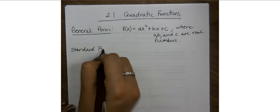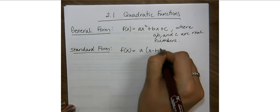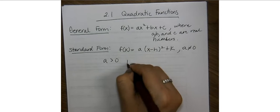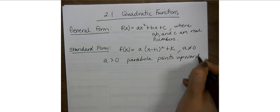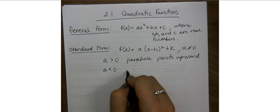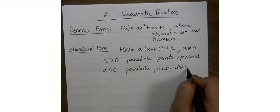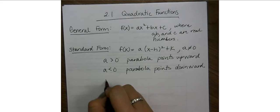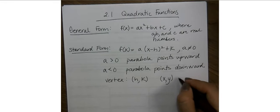The one we're going to really focus on is standard form, and that's where you can get a lot of your information from. So it's f of x equals a times x minus h squared plus k. A cannot equal 0. If a is greater than 0, the parabola points upward. If a is less than 0, or it's negative, then we have a parabola pointing downward. The vertex is your h, k, and a point x, y is just a point on the parabola — it's considered a solution point.